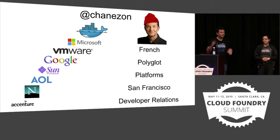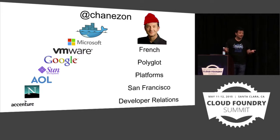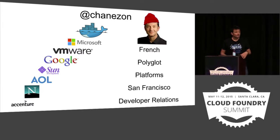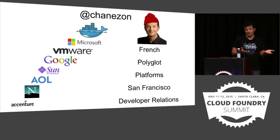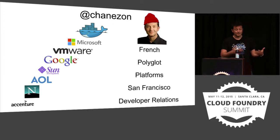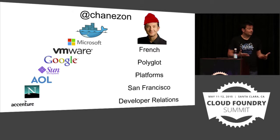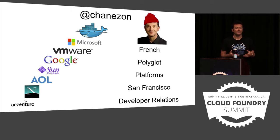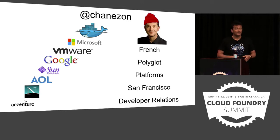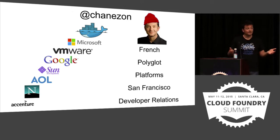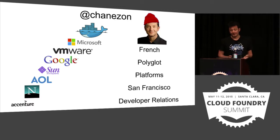A little bit about myself. I spent all my career working on server-side plumbing — I'm a Java guy. I used to be at Sun, then I moved to Google to do developer relations. At VMware, I did developer relations for Cloud Foundry. At Google, it was for Google App Engine. Then I moved to Microsoft where I spent the past two years. Microsoft has changed a lot, especially in these past two years — opening up to Java, open source, and Linux. I'm really glad to have been part of that adventure. Recently I moved to Docker, and I'll explain why.